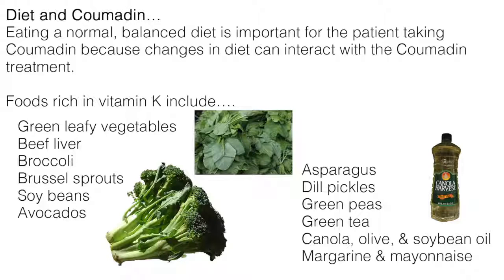There is no need to avoid foods with vitamin K, but it is best to maintain a consistent level of consumption and to be aware of foods with vitamin K so overconsumption does not occur. Foods rich in vitamin K include green leafy vegetables, beef liver, broccoli, Brussels sprouts, soybeans, avocados, asparagus, dill pickles, green peas, green tea, canola, olive and soybean oil, margarine, and mayonnaise.